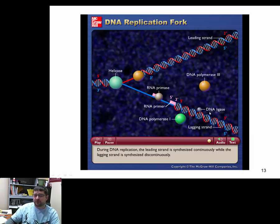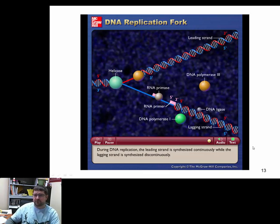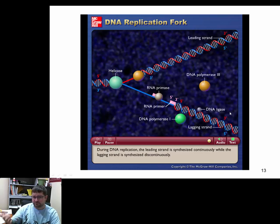Some researchers have tried to devise ways to get primase to recognize the very end of the DNA and place the primer there. This has not yet been achieved, but if you could do that and reduce the amount of DNA removed at every replication, you could potentially increase the lifespan of organisms.